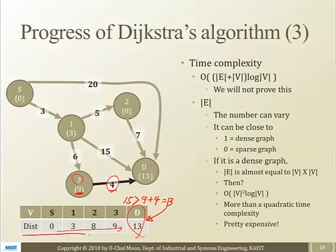After that, we only have D left, so we don't have to do any further iterations. The memoization table indicates to reach the source node 0 time. To reach the first node, it takes 3 time units. To reach the second node 2, it takes 8 time units. To reach node 3, it takes 9 time units. And to reach node D, it takes 13 time units. This is how the Dijkstra algorithm works.